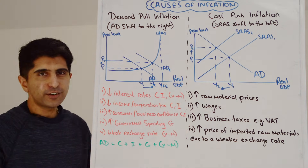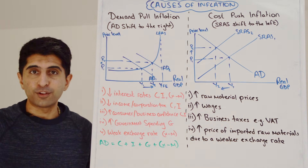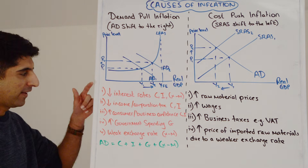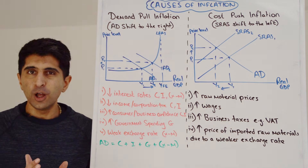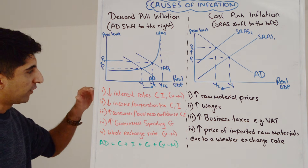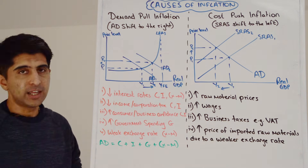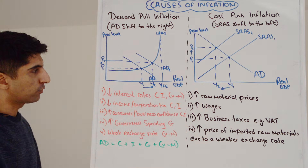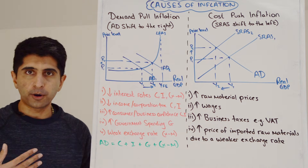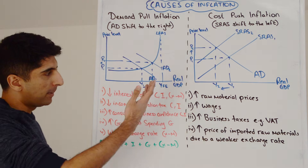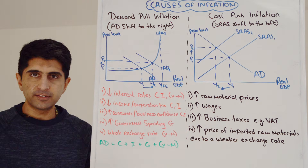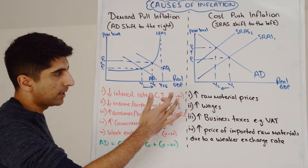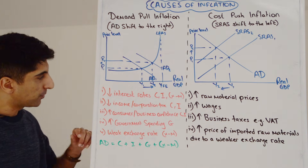You just need to know why aggregate demand can shift to the right — what could lead to this AD shift to the right. For example, it could be lower interest rates — a reduction in interest rates — which makes it cheaper for consumers to borrow and spend, makes it cheaper for businesses to borrow and invest, and can also weaken the exchange rate and boost net exports.